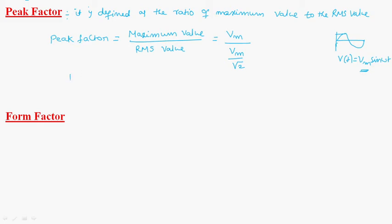From that, peak factor is equal to Vm divided by Vm over root 2. Vm and Vm will get cancelled. The remaining is root 2, that is 1.414.